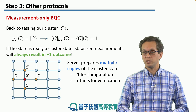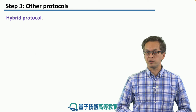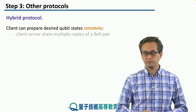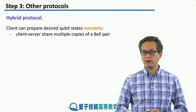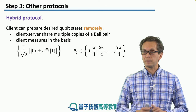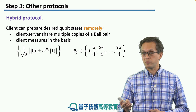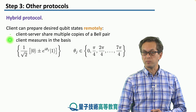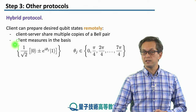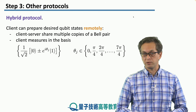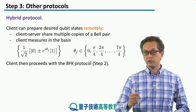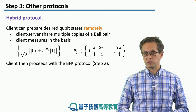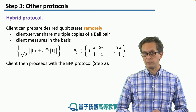This concludes measurement-only BQC. A hybrid protocol between BFK and measurement-only works as follows: the client can prepare desired qubit states remotely, achieved with pre-shared Bell pairs between client and server. For every qubit in the brickwork state, they share one Bell pair. The client measures its part in the XY-plane of the Bloch sphere at the angles used in BFK, remotely preparing qubits on the server's side without revealing the measurement basis. The client then proceeds with the usual BFK protocol.